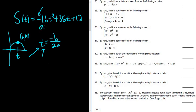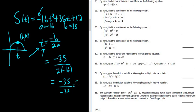So a here is -16 and b is 35. So this is equal to -35 over 2 times -16. So this is equal to -35 over -32. So this is the same thing as 35 over 32.